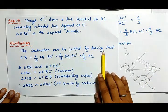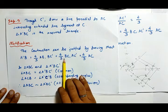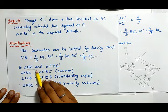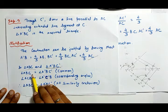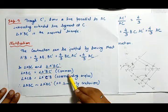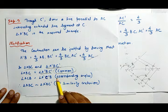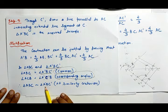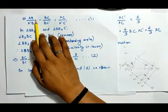The justification of the construction can be proved by showing that A dash B equals 4/3 AB, BC dash equals 4/3 BC, and AC dash equals 4/3 AC. In triangle ABC and triangle A dash BC dash, angle ABC equals angle A dash BC dash (common), and angle ACB equals angle A dash C dash B by corresponding angles. Therefore triangle ABC is similar to triangle A dash BC dash by AA similarity criterion.